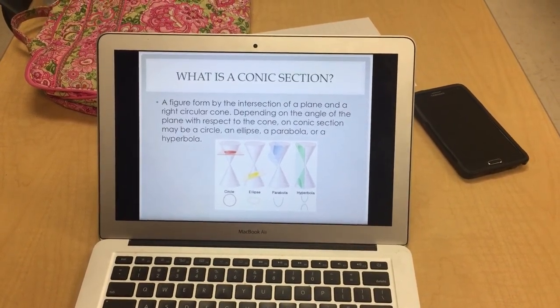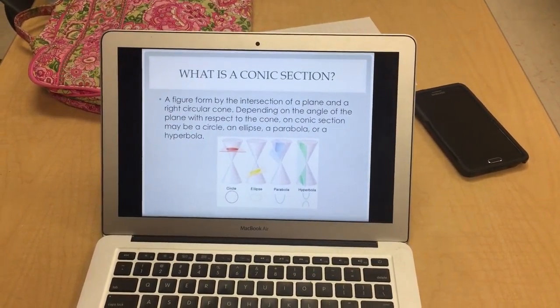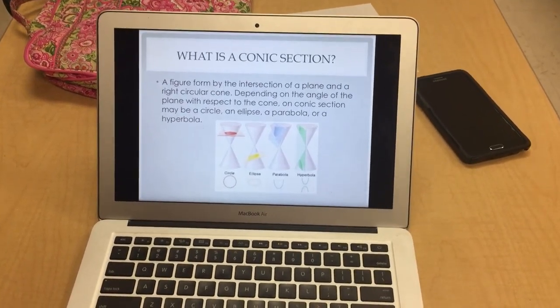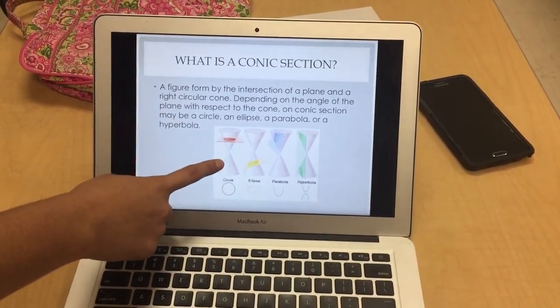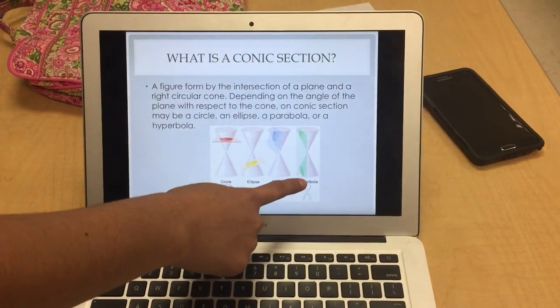So what is a conic section? A conic section is a figure formed by the intersection of a plane and a right circular cone. Depending on the angle of the plane with respect to the cone, a conic section may be a circle, which is right here, an ellipse, a parabola, or a hyperbola.